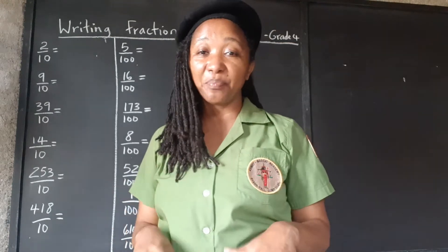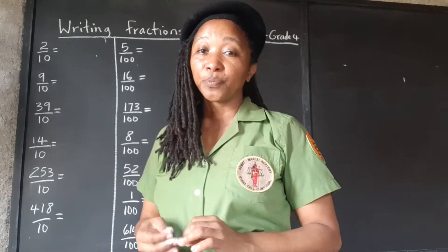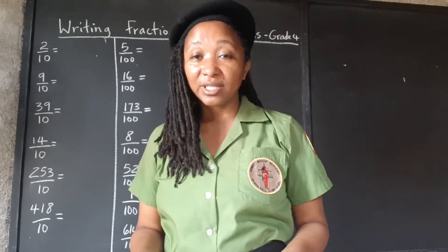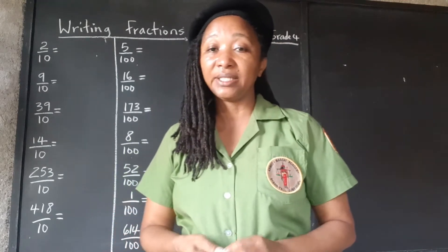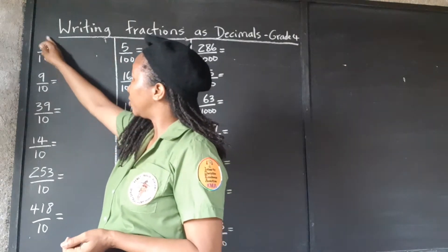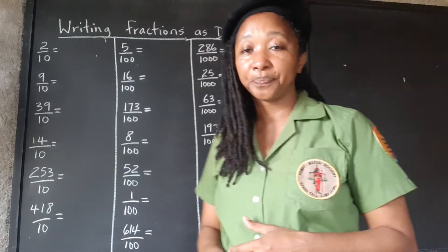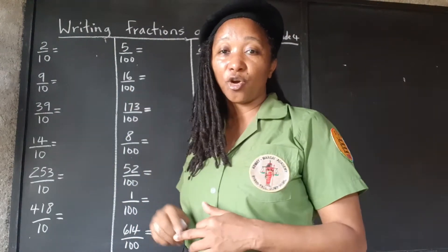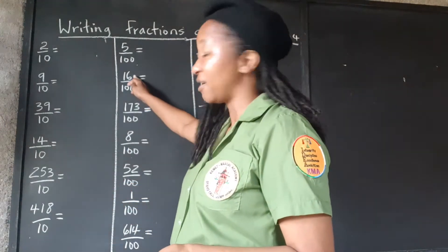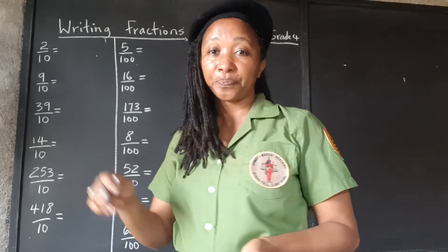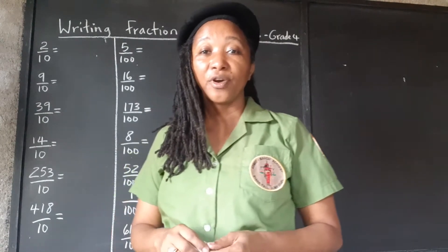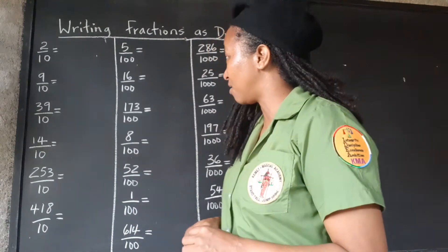There's a pretty straightforward and simple way to change these fractions to decimals. Once you have a power of 10 in the denominator, you simply look to see how many zeros are in the power of 10. If it is one zero, you're going to move one place to the left in the numerator. If it's 100 in the denominator, you're going to move two places to the left. If you're dividing by 1,000, you're going to move three places to the left.